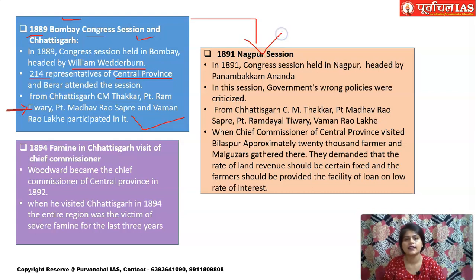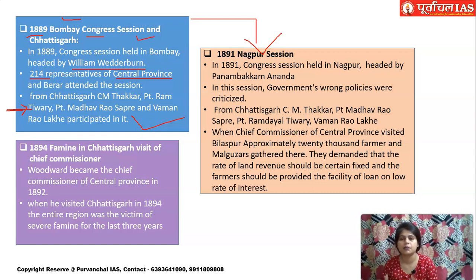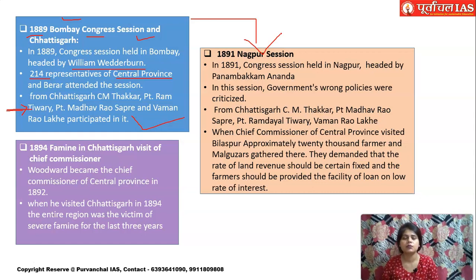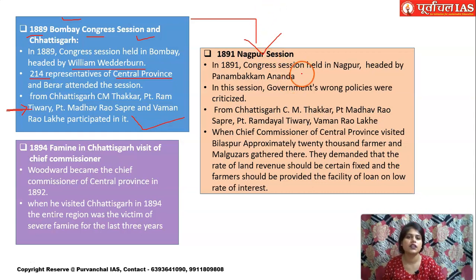In 1891 a Congress session was held at Nagpur where British government policies were criticized — changes in land, education, famine, etc. The land issue brought a lot of unrest because taxes were increased heavily, becoming a burden for farmers. This session was also attended by C.M. Thakkar, Pandit Madhav Rao Sapre, Pandit Ram Dayal Tiwari, and Vaman Rao Lakhe.